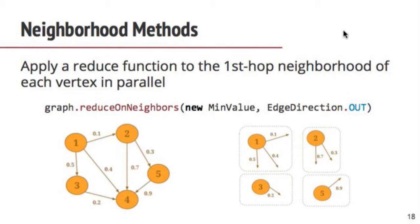If you want a subgraph keeping only positive vertex values and negative edge values, you use the subgraph method providing two UDFs. Something more interesting is neighborhood methods, which allow you to apply an aggregation function on the neighborhoods of each vertex in parallel. You call reduce-on-neighbors or reduce-on-edges, which creates groups of each vertex with its neighbors, and you can apply an aggregation function. For example, reduce-on-neighbors with mean value and edge direction out will operate on each vertex with its out-neighbors and compute the minimum neighbor value.